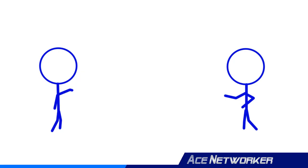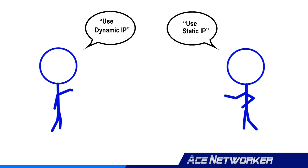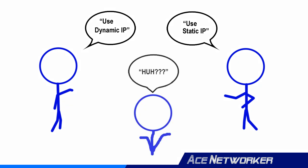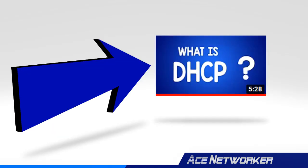When you first start learning about computer networking and IP addresses for all of the components — the computers, devices, printers, servers, etc. on a network — you quickly start hearing the terms dynamic IP and static IP used repeatedly. So what are technicians and admins talking about when they use these terms?